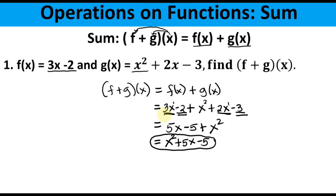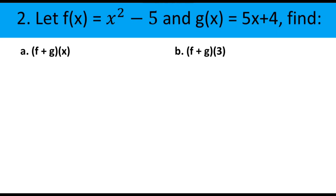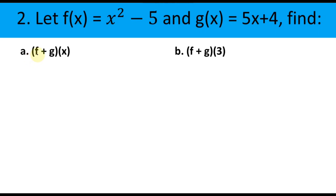So the answer is x² + 5x − 5. You cannot add unlike terms — for example, 3x + x² cannot be added because they are unlike terms. We can only add like terms. Example number 2: let f(x) = x² − 5 and g(x) = 5x + 4.